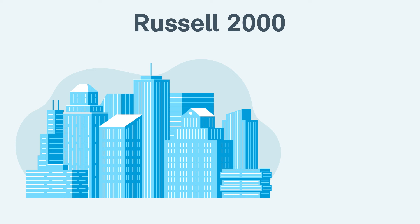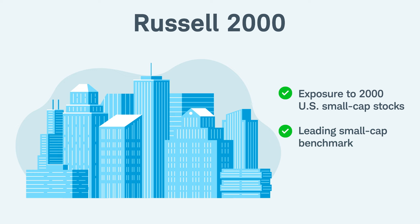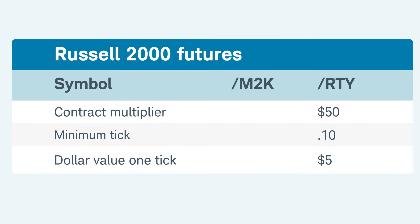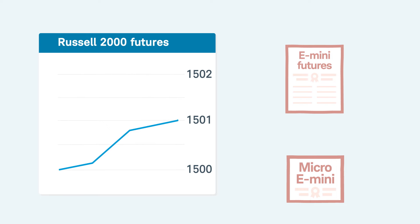And finally, there's the Micro E-mini Russell 2000. This contract gives traders exposure to 2,000 U.S. small-cap stocks and is the leading small-cap benchmark. Symbol /M2K, this contract has a multiplier of $5. Its minimum tick is one-tenth of a point, which means the dollar value of one tick is equal to $0.50. If the M2K moves one full point, traders would gain or lose $5 versus $50 if they were trading the standard E-mini Russell 2000.